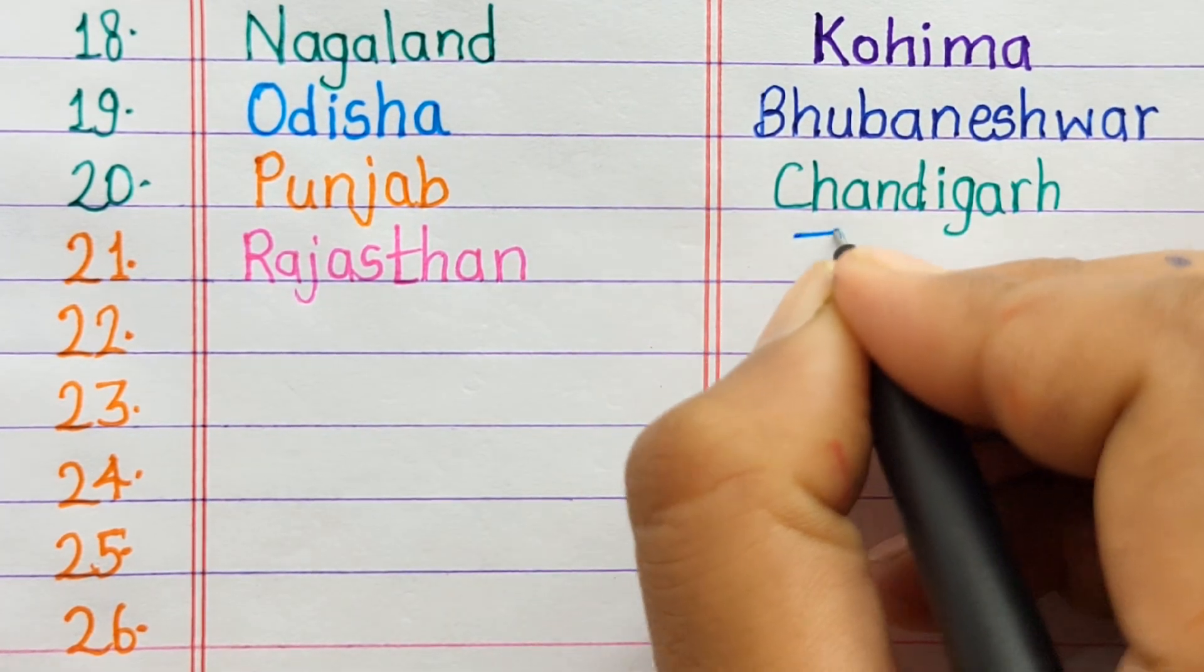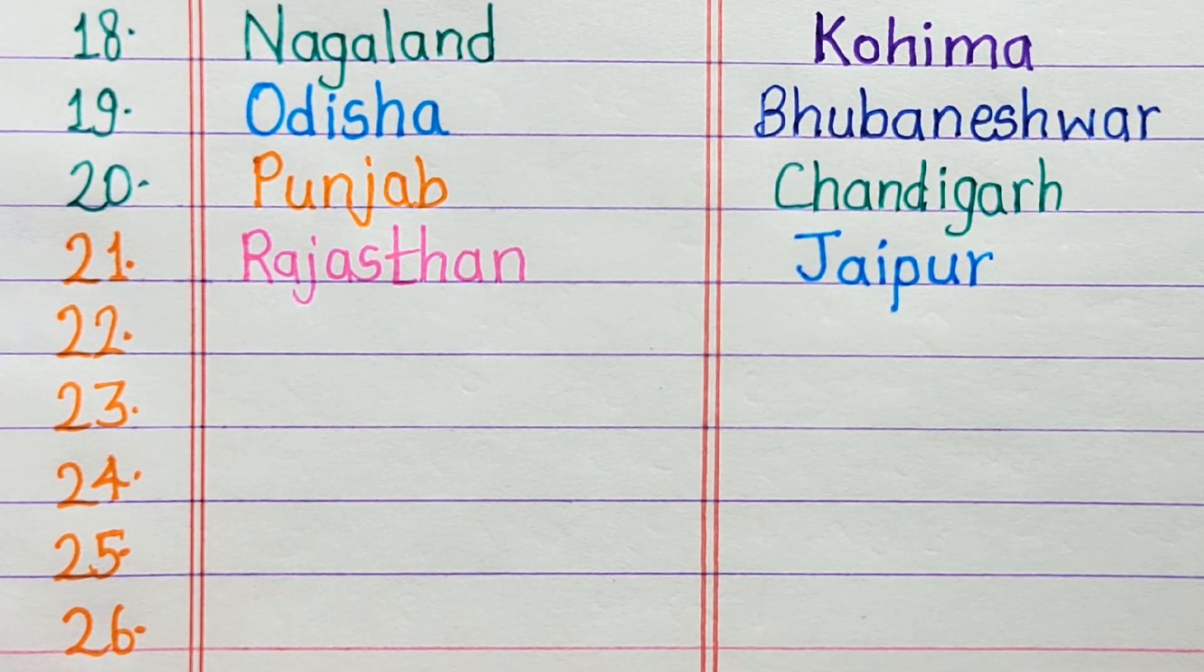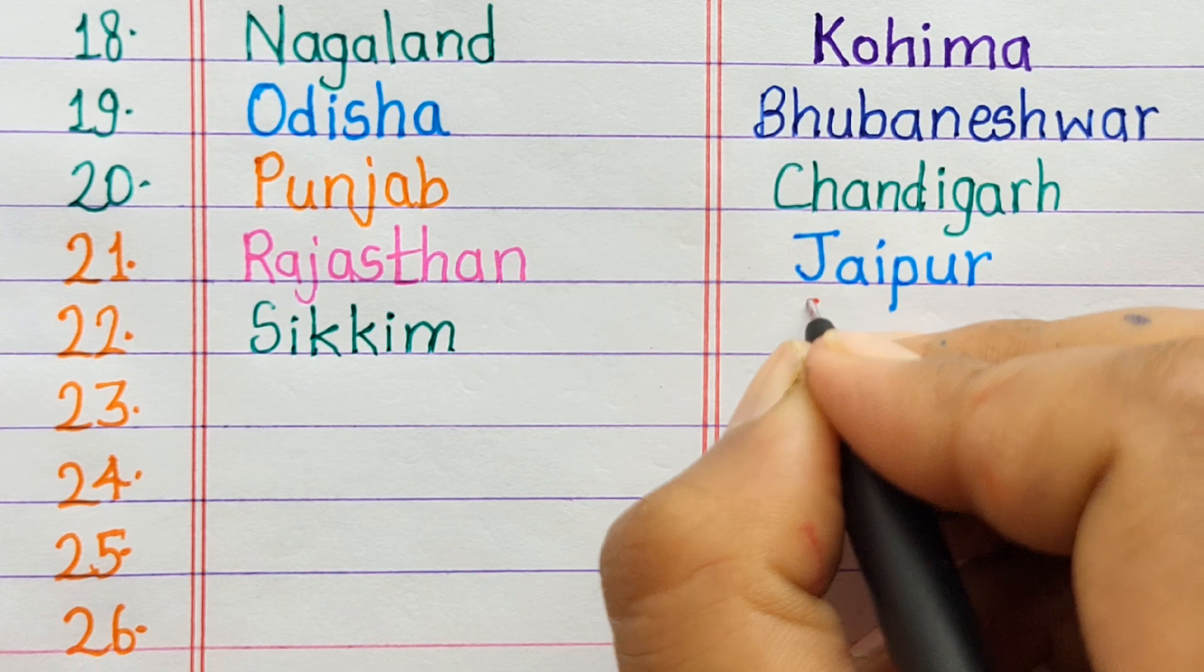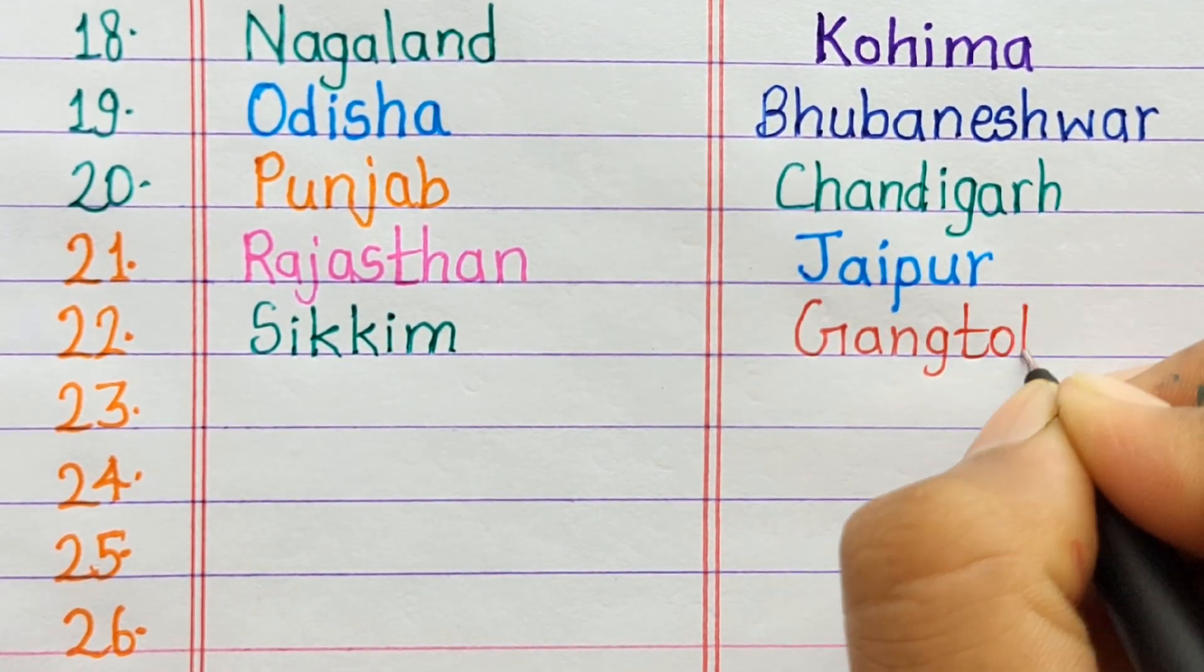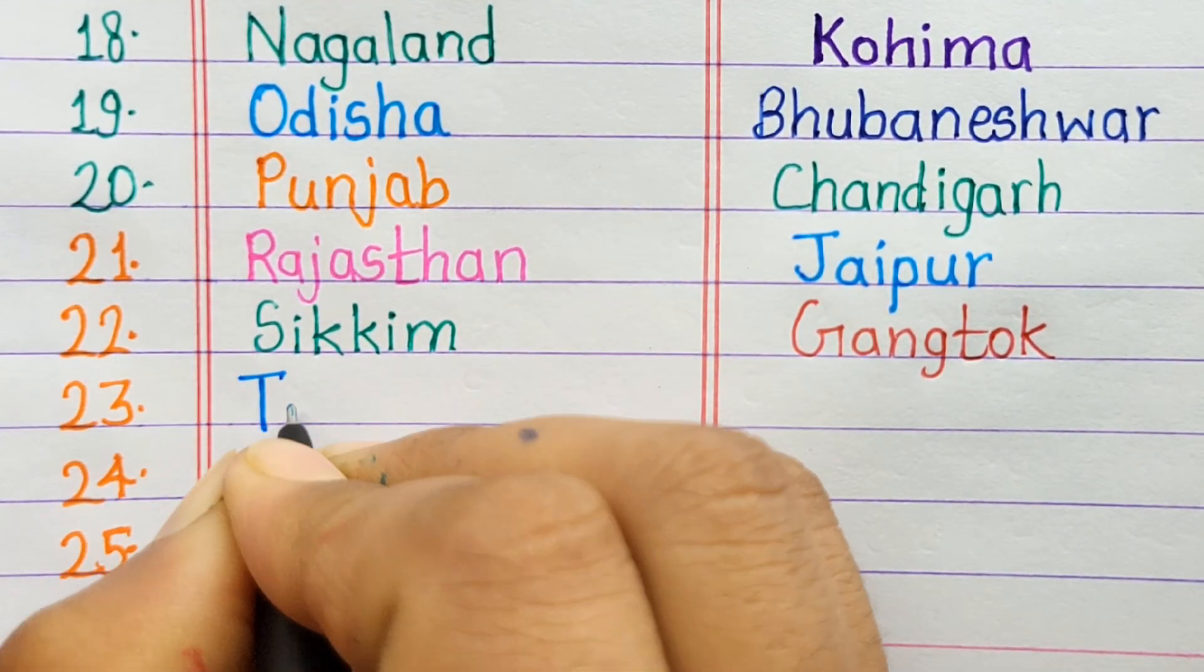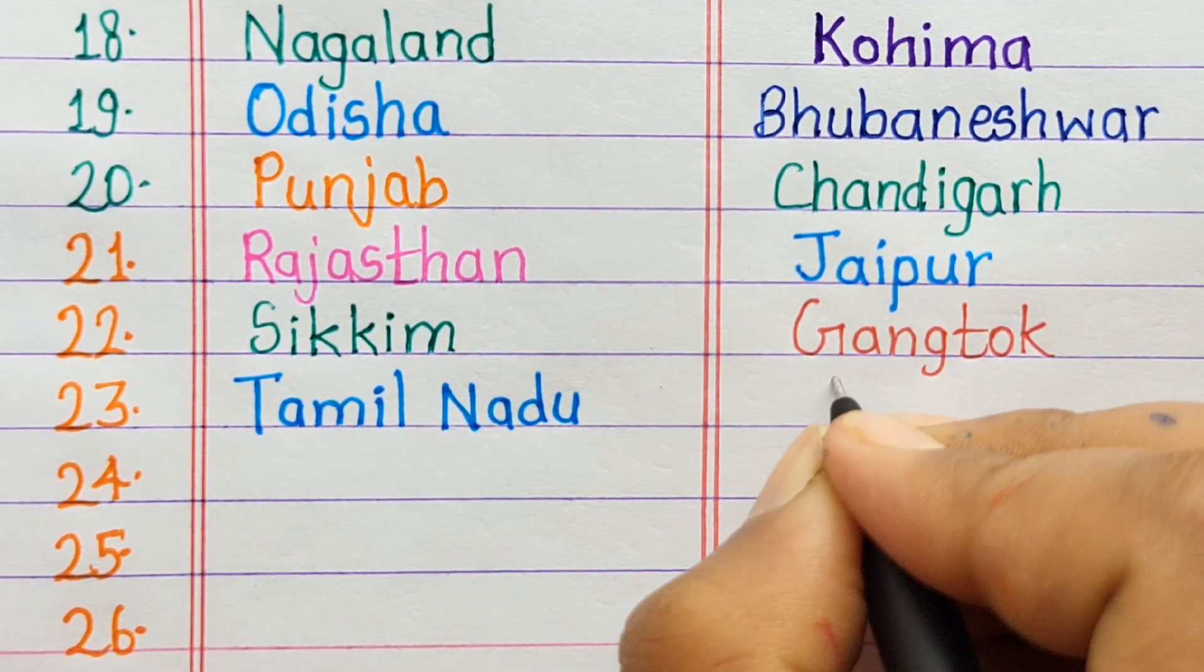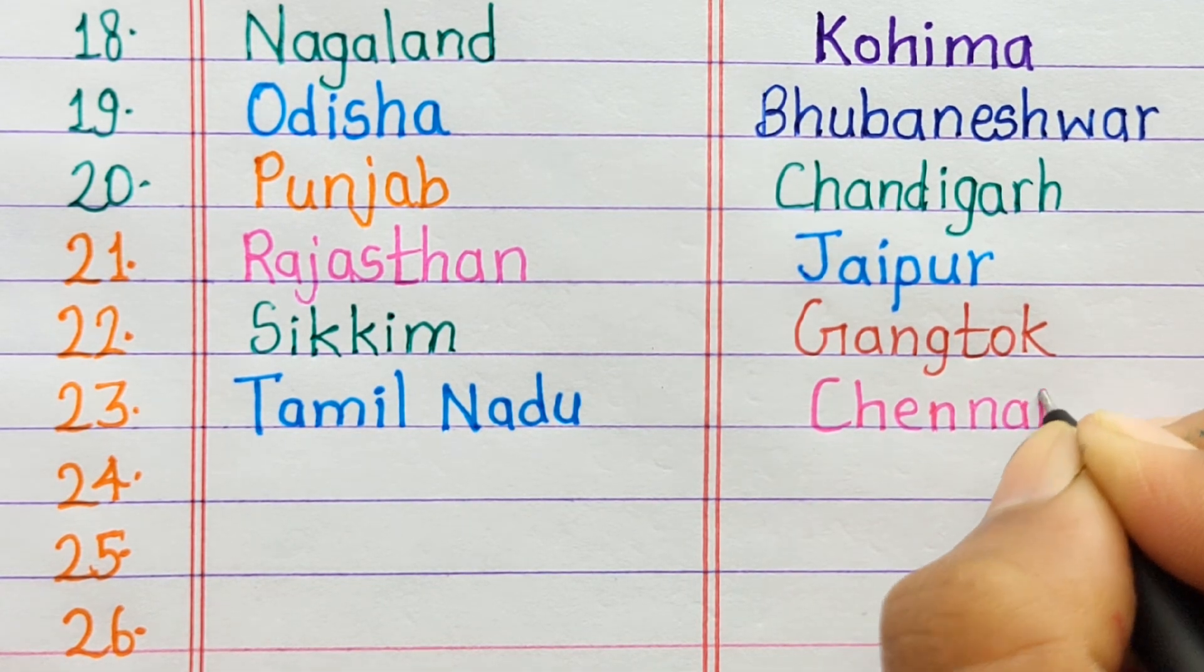Number 21. Rajasthan, Jaipur. Number 22. Sikkim, Gangtok. Number 23. Tamil Nadu, Chennai.